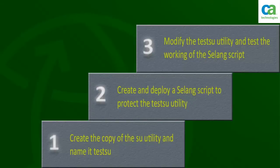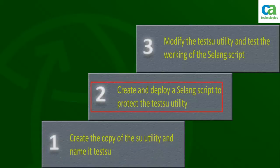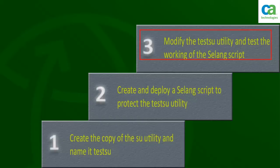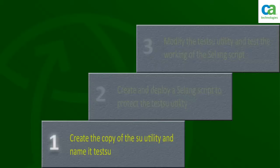Now that you understand how to protect trusted programs using CLANG, let's look at a practical example. You have a Linux endpoint where you have an important program — the TestSU utility. You have to create a CLANG policy that will protect the TestSU program. You will then modify the TestSU program, and since it is protected, you will be unable to use the program again. Finally, you have to trust the program again to ensure it can be executed in future.